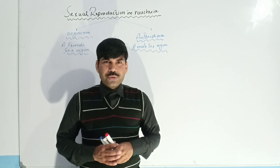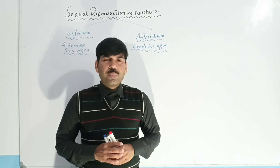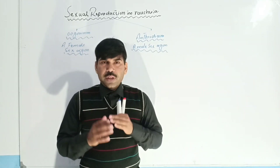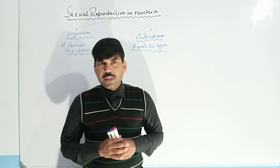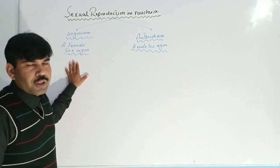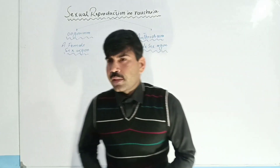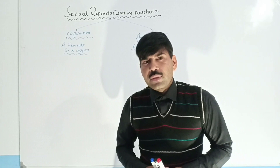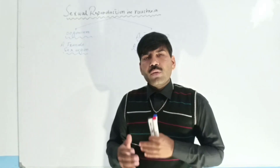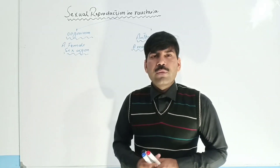Assalamu alaikum students. Today we are going to study about the sexual reproduction in Vaucheria. For sexual reproduction, both male and female sex organs are needed. The male sex organ in Vaucheria is the antheridium and the female sex organ is the oogonium. In this lecture we will focus on the structure and development of oogonium, how it is fertilized, and how the fertilized oosphere can germinate to produce a new filament of Vaucheria.